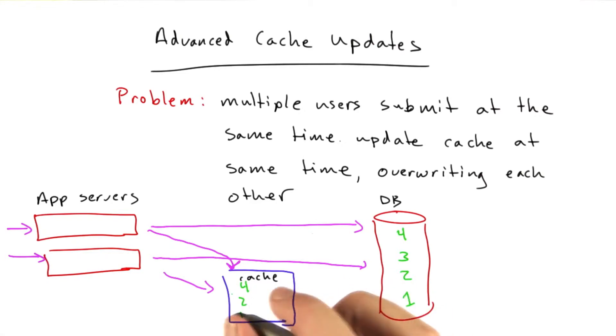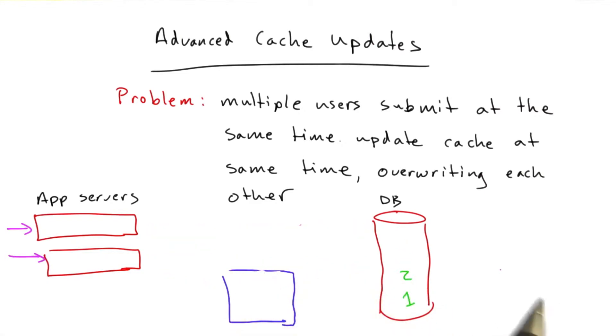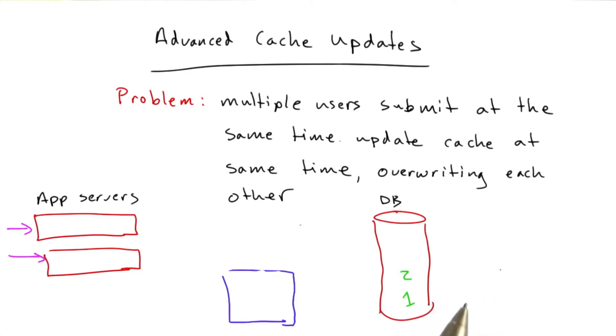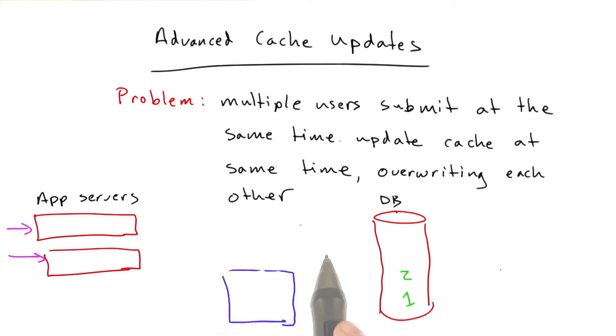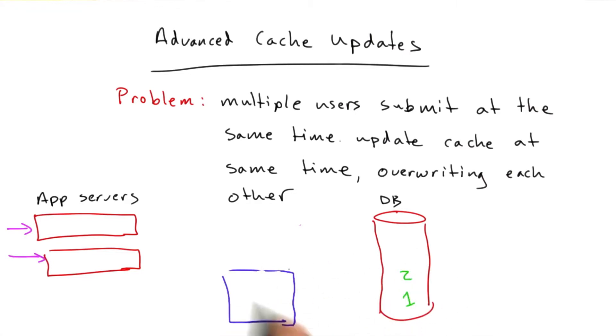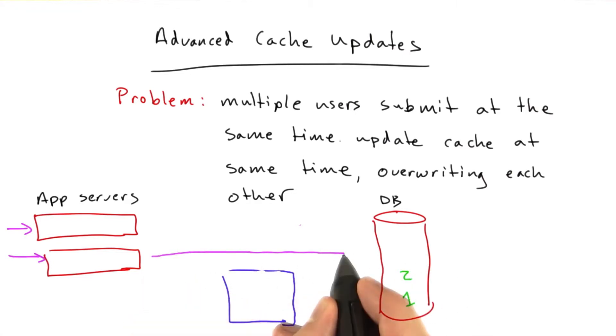Now let's look at another way this problem can happen. Say we were using the first approach we talked about, where when we write to the database we immediately do a read from the database and update our cache that way — we can still have this problem.